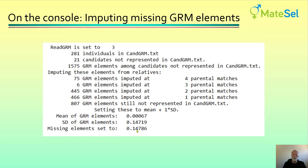We do that to discourage the situation where individuals missing information might be seen as lowly related to the rest of the population — we rather penalize them than give them that benefit. If you don't like the way this is done, you can have your own way of imputing these missing relationships and present that as a fait accompli in your GRM as you present it to MateCell.